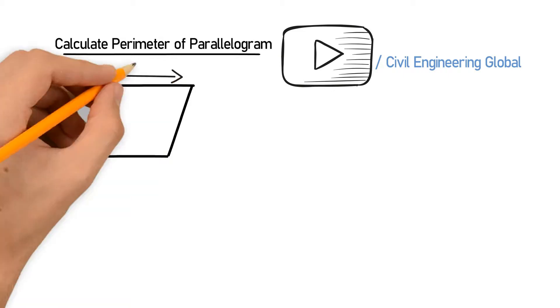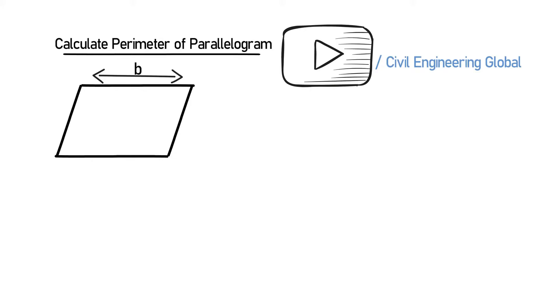So this portion is the B, this is a, and this line is the height H, and the angle here is 90 degrees.